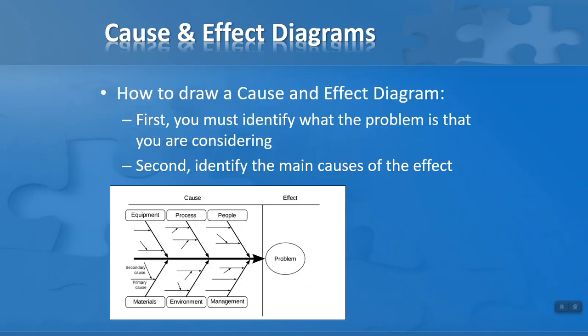So how do we draw a cause and effect diagram? Well, we must first identify what the problem is that we are considering. If we think of the diagram like a fishbone diagram, we put the problem statement into the head of the fish. The problem statement is the effect, and then we need to know what the causes of that effect are—hence the cause and effect diagram.